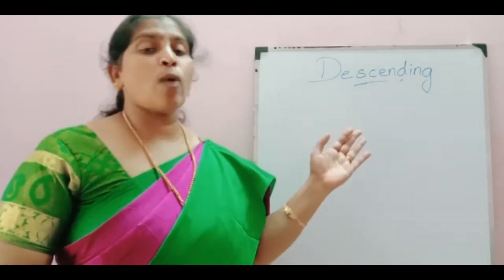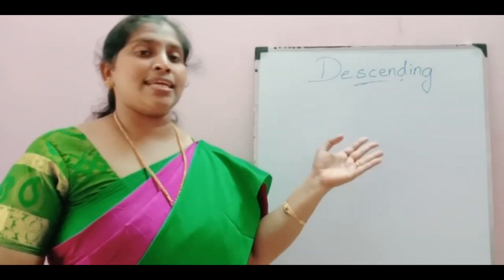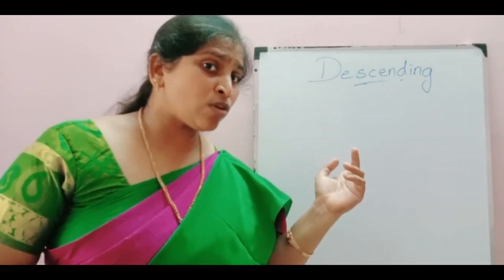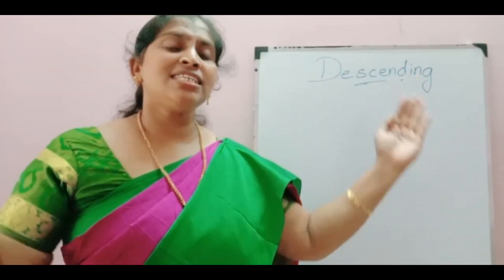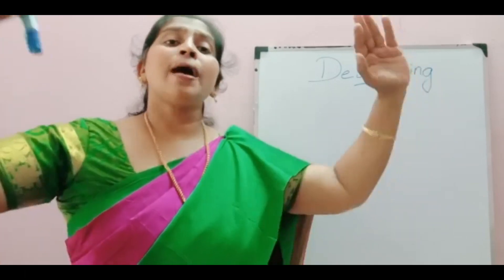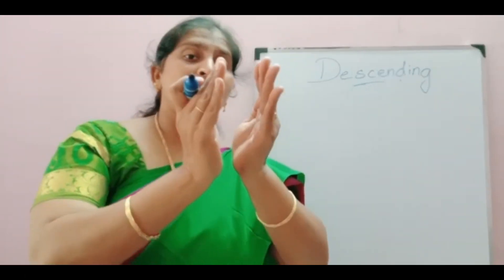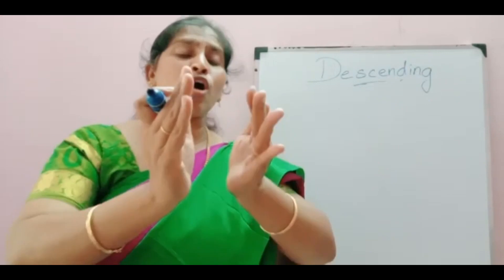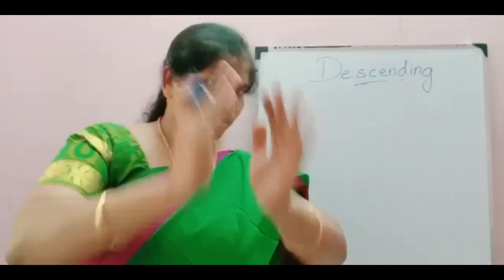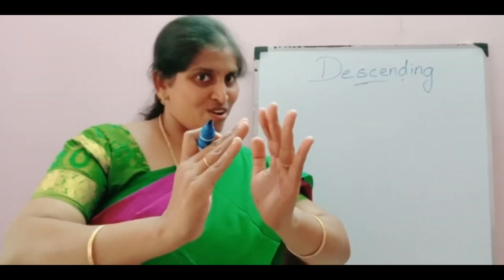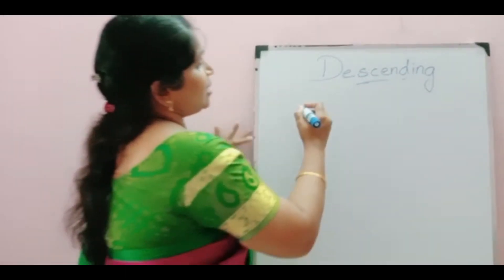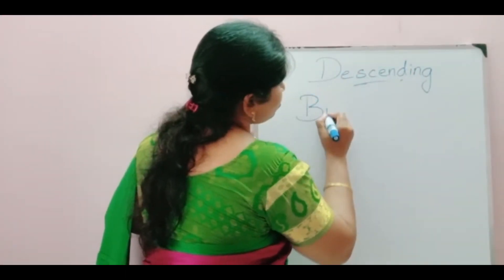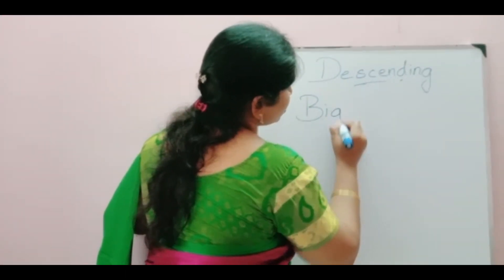Next is descending. Ascending means small to big. Descending means big to small — big to small.